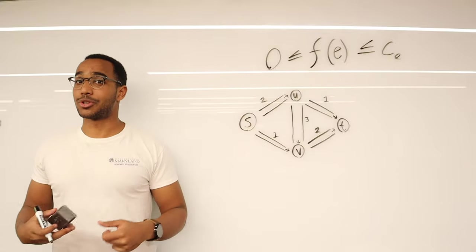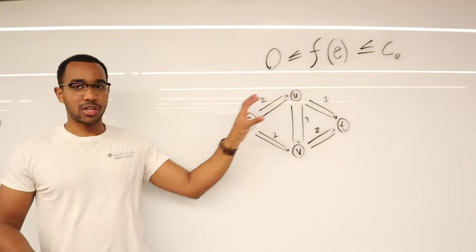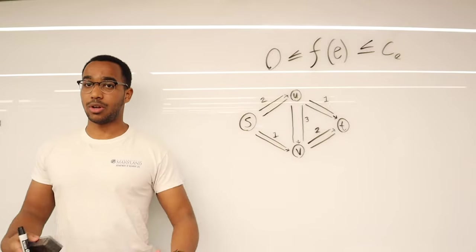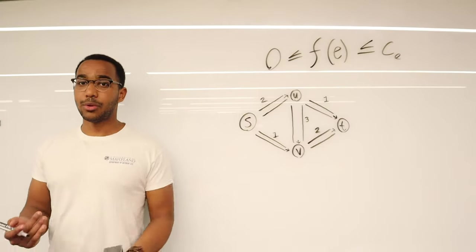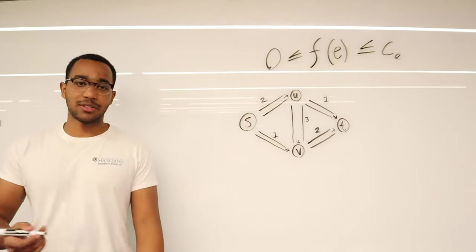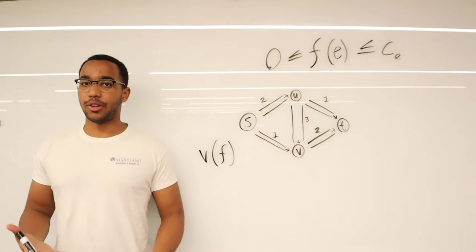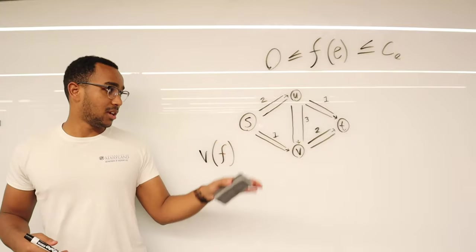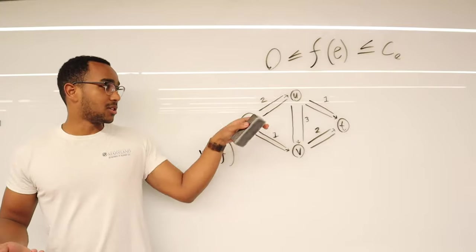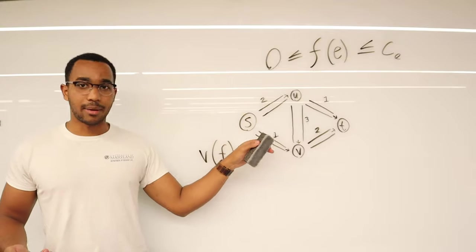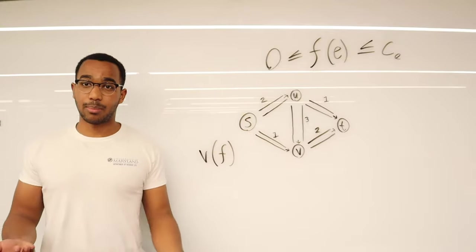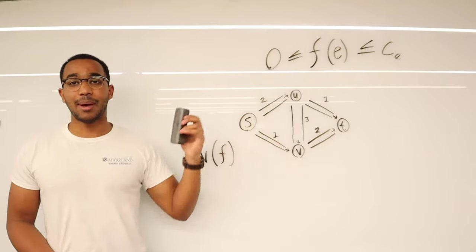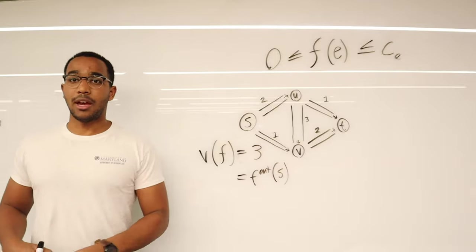The flow through any edge can't be less than zero and can't be greater than the capacity of that edge. The value of a flow, denoted V of F, is the amount of flow we can get to come out of the start vertex. The max it can ever be is three — two coming out here, one coming out there — which is the sum of all edge capacities coming out of the start.